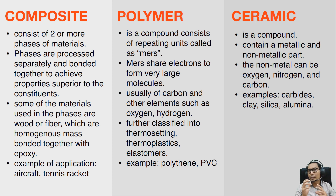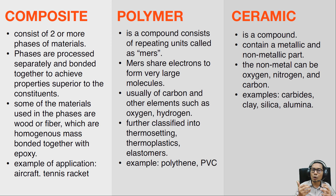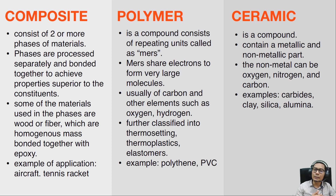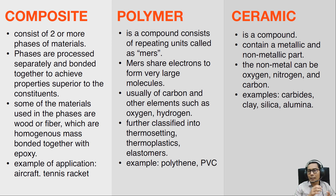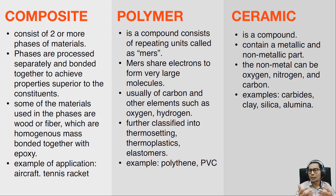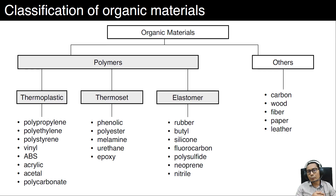Polymer materials are compounds consisting of repeating units called mers. Mers share electrons to form very large molecules, usually containing carbon and other elements such as oxygen and hydrogen. Further classifications of the polymer group are thermosetting, thermoplastics, and elastomers. Examples include polyethylene and PVC. The ceramic group of material is a compound containing metallic and non-metallic parts, where the non-metal can be oxygen, nitrogen, or carbon. Examples include carbides, clay, silica, and alumina.